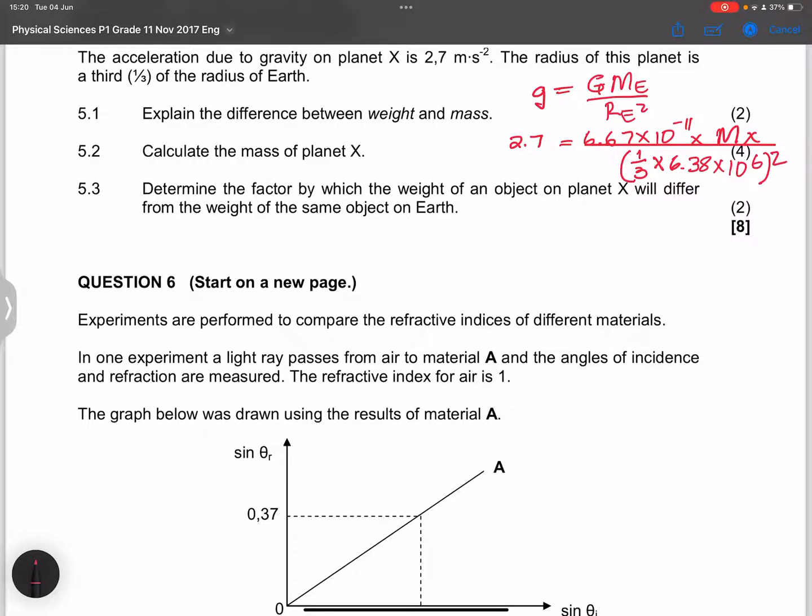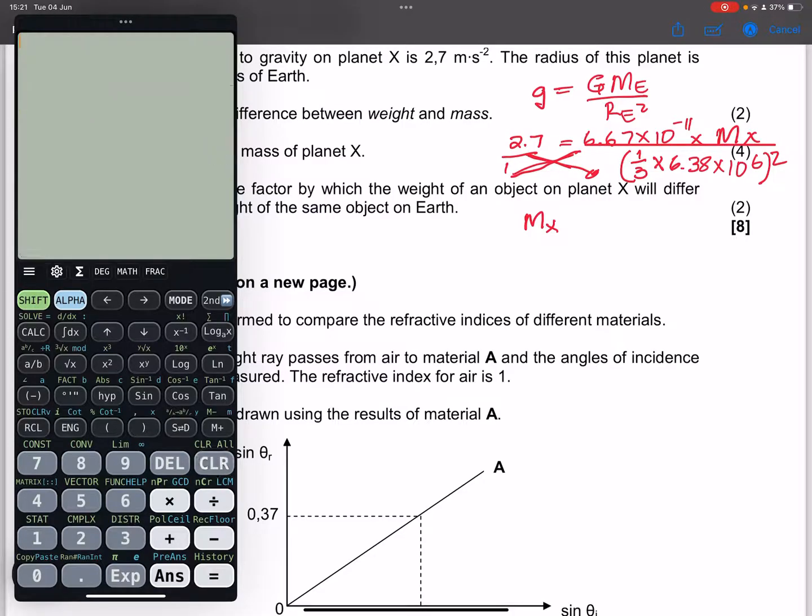And what we're going to do is just look for the mass of planet X. And what I'm going to do there, if we cross multiply, I know that this multiplies with 2.7 and 6.67 times MX times 1. This is 2.7 over 1. And in this case we're going to divide. And please remember, note that we have squared the amount.